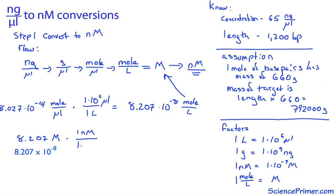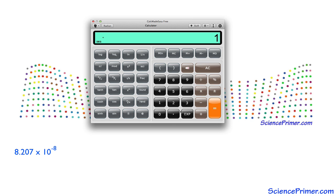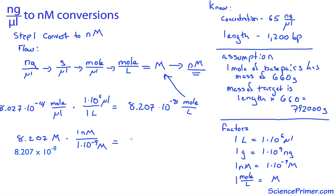The final conversion will produce the desired unit. 1 nanomolar is 1 times 10 to the negative 9 molar. Dividing by 1 times 10 to the negative 9 is 82.07 nanomolar. This is the end of the first step.